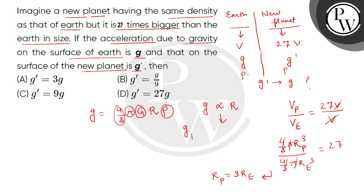The gravity on planet divided by the gravity of Earth is equal to the radius of planet. Now we can put g' and g. So this is 3. So we will get g' value as 3g.